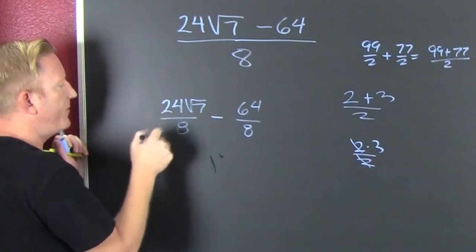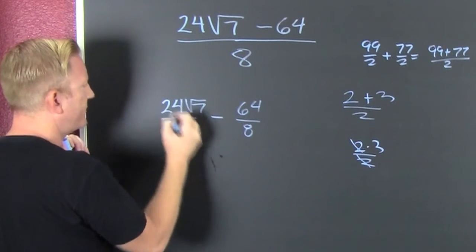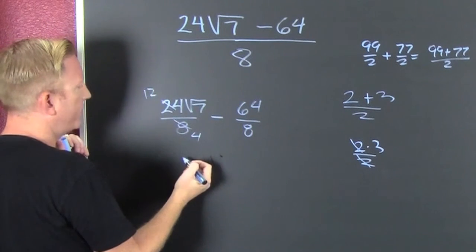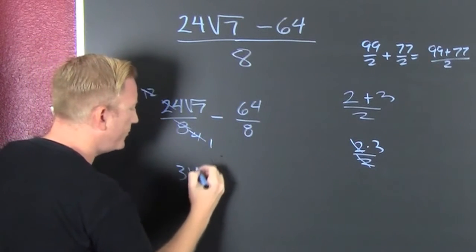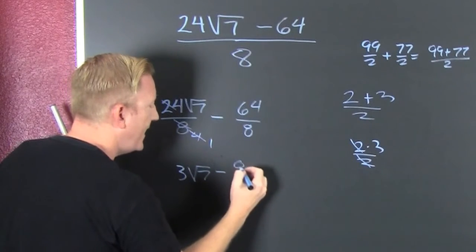8 goes into 24 how many times? Well, it's at least 2. And then that's a 4. That's a 12. Oh, looks like they could go further. That 4, that's a 1. You're a 3. So now you have 3 roots of 7 minus 8.